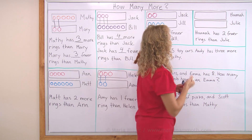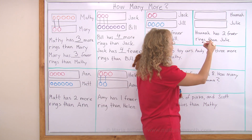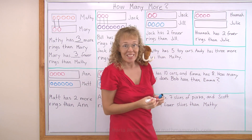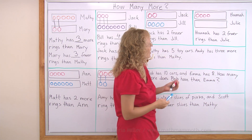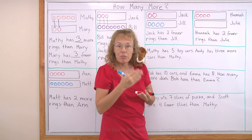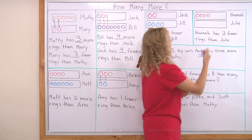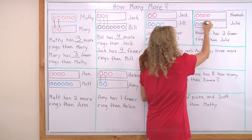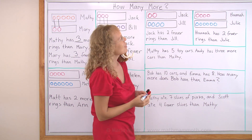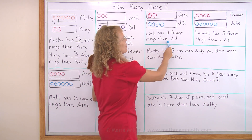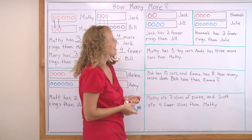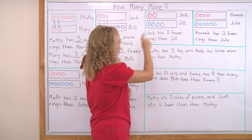Over here I'll do it a little differently. Hannah has two fewer rings than Julie. I'll draw some for Hannah — let's say four, let's give Hannah four rings. And now Julie — who has more, Julie or Hannah? Hannah has fewer or less rings, so Julie has more. I'll draw Julie first the same amount and then two more, so that Hannah has two fewer rings than Julie. Notice how this was the same idea but I drew different amounts — there were two different solutions. Actually, there are many more different solutions for these.